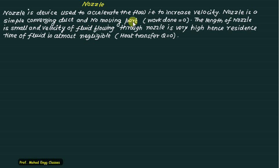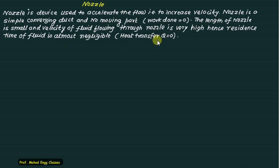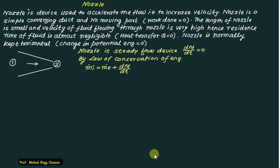The nozzle does not have a moving part, so work done equals zero. The length of the nozzle is so small and the velocity of the fluid flowing through it is very large, hence the residence time of the fluid is almost negligible. Therefore we assume no time is available for heat transfer, so practically heat transfer from the nozzle is almost equal to zero. This figure demonstrates a convergent nozzle where flow moves from high pressure to low pressure, from section one to section two.